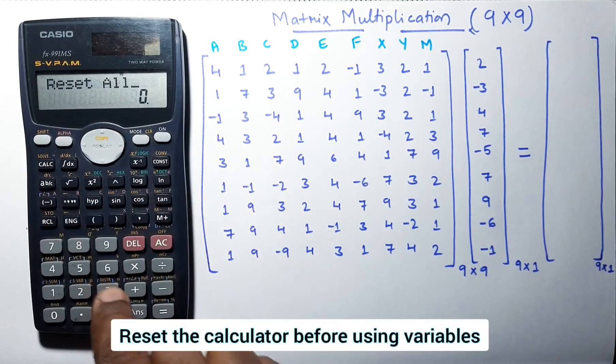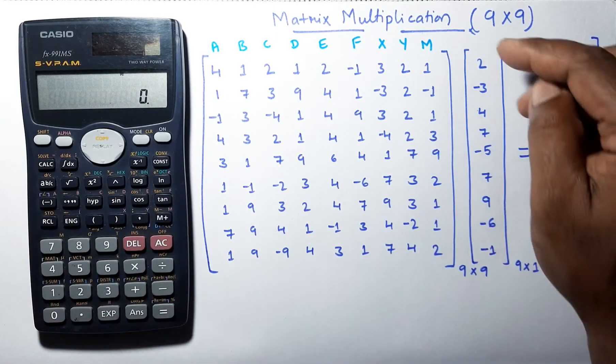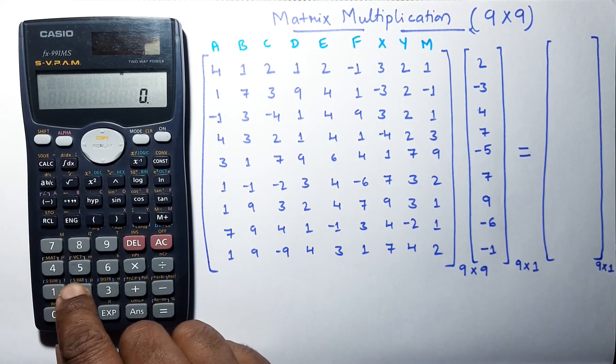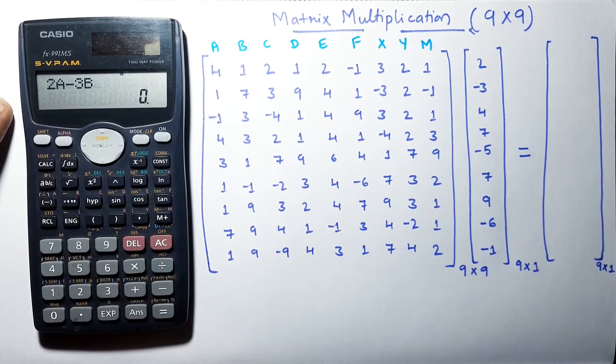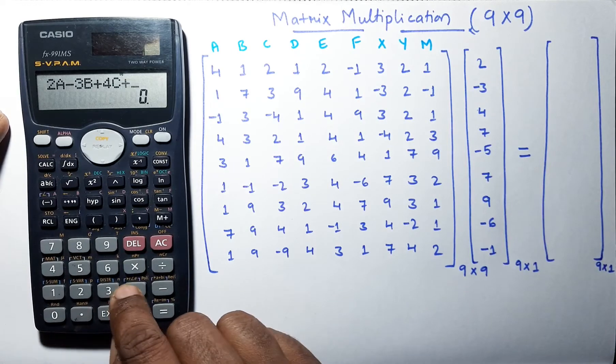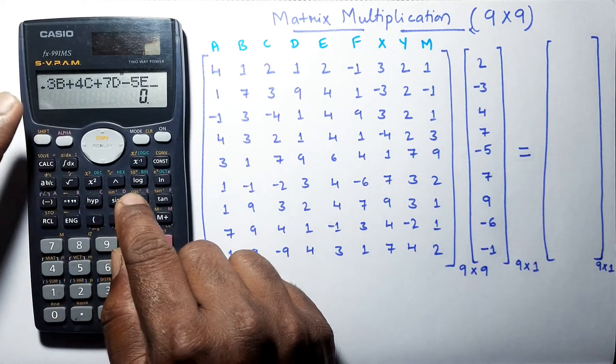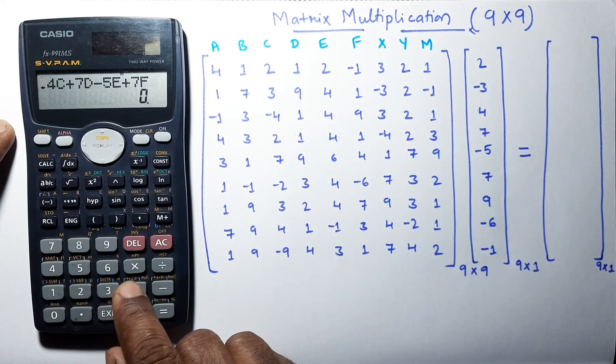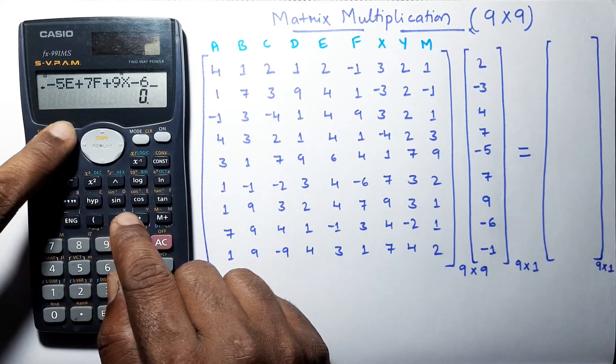Now, let us reset the calculator once. Now, we will form an equation using these variables with the 9 cross 1 matrix column. Like, 2 into A, minus 3 into B, plus 4 into C, plus 7 into D, minus 5E, plus 7F, plus 9X, minus 6E.